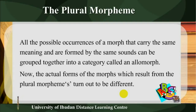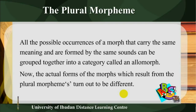All the possible occurrences of a morph that carry the same meaning and are formed by the same sounds can be grouped together into a category called an allomorph.